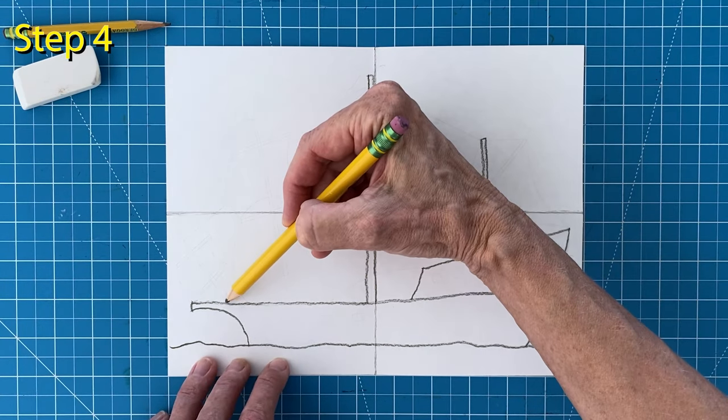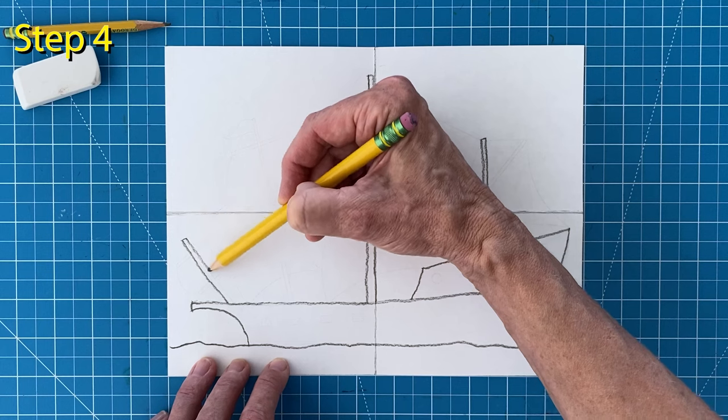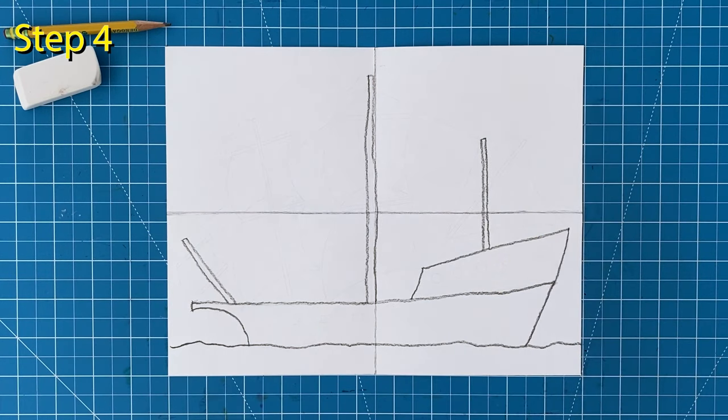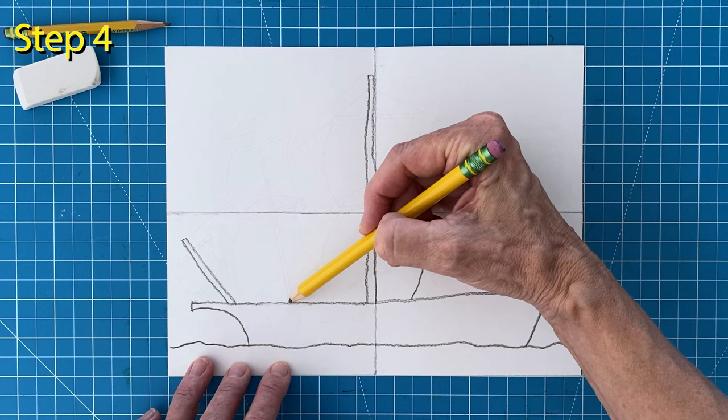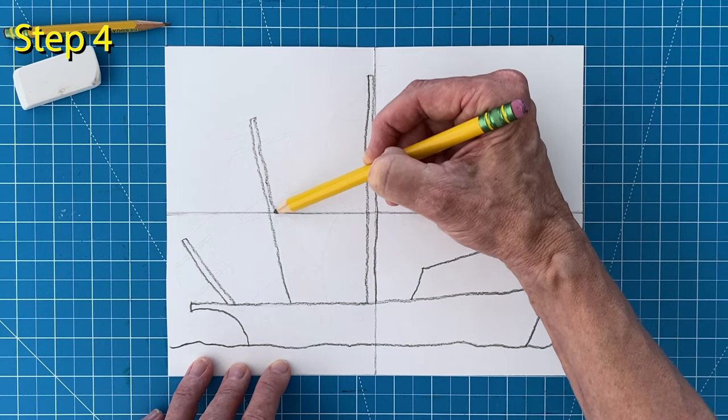Next draw the shortest pole way over on the left. It needs to angle a bit. And now draw the last pole centered in the space left over. It should be a little bit shorter and leaning to the left.